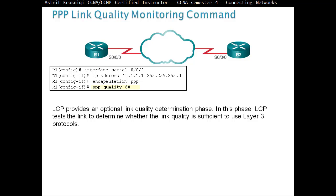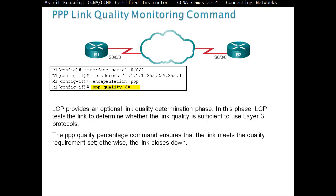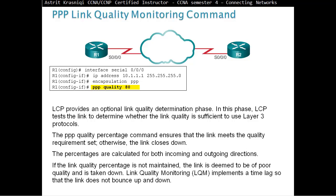Link Quality Monitoring Command. The PPP Quality 80 — that's 80% — Link Control Protocol provides an optional Link Quality Determination Phase. In this phase, the LCP tests the link to determine whether the link quality is sufficient to use the Layer 3 protocols. The PPP Quality Percentage Command ensures that the link meets the quality requirements set; otherwise the link closes down. The percentages are calculated for both incoming and outgoing directions. PPP Quality 80%: as long as it's 80% or higher we're fine; if it falls below 80%, then the link is brought down.